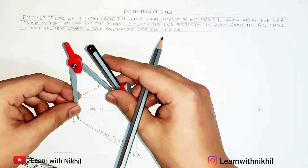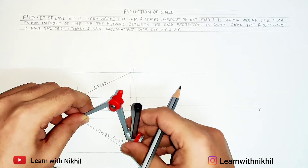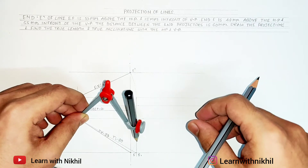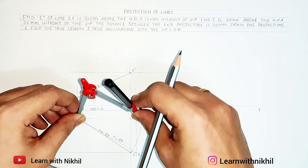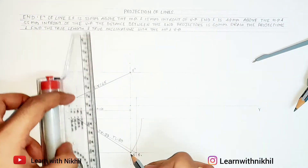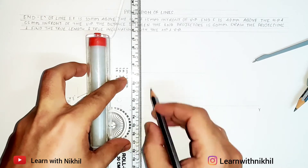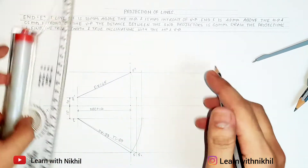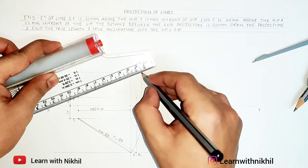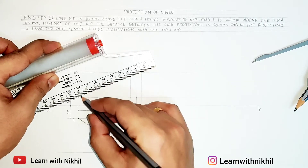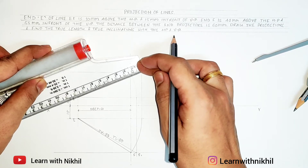Now to find the true length in the front view, we will take the top view length as the radius, draw the curve, and extend it towards the axis line. Through this intersection we will extend a line upwards, and where it touches — this will be the true length in the front view. So this distance will be the same, that is 80 mm.